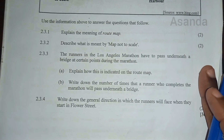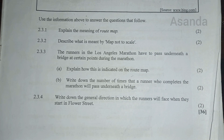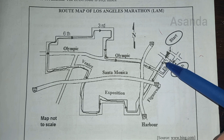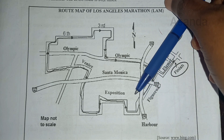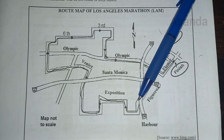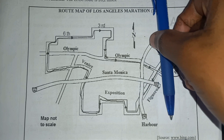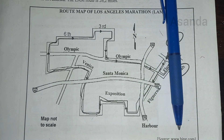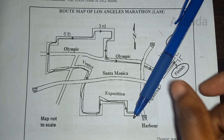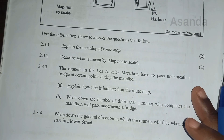Question 2.3.5: Write down the general direction in which the runners will face when they start in Flower Street. First, let's find Flower Street — there it is. They're starting at Flower Street and facing downward, and downward is south. However, they're not facing directly south; they're facing south but also a bit to the left, which would be southwest. And we are done with our map.